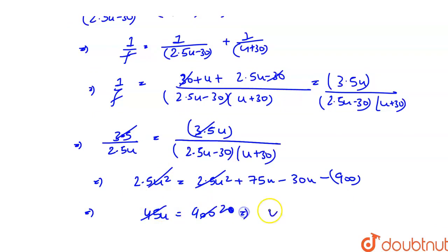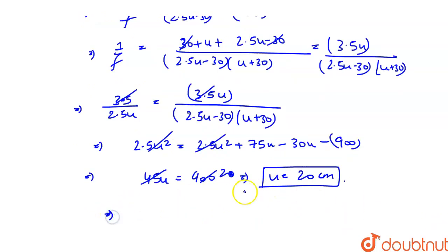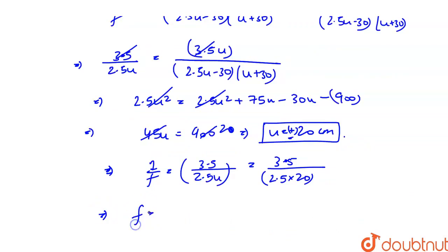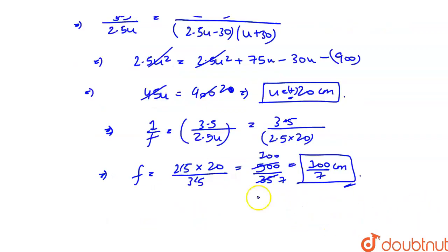u value is 20 cm and this is positive, so this is correct. Focal length is 1 upon f equals 3.5 divided by 2.5u. So 3.5 divided by 2.5 times 20 cm. f value is 2.5 times 20 divided by 3.5. Canceling gives us 500 divided by 35, which is 100 by 7 cm. This is the focal length. This is positive, which makes sense because it is a converging lens.